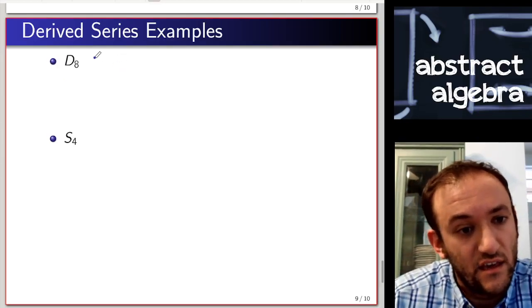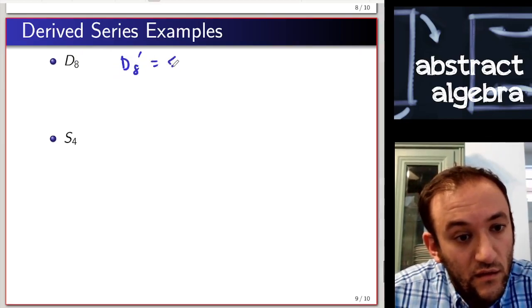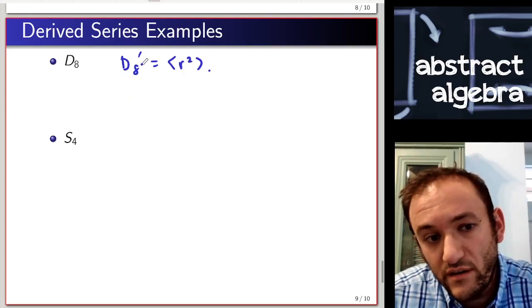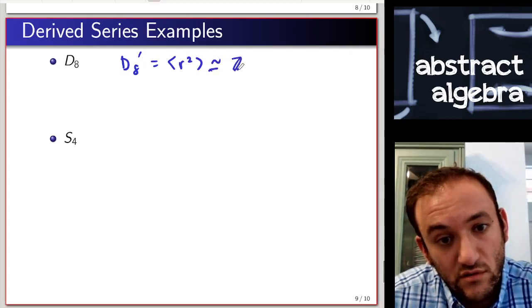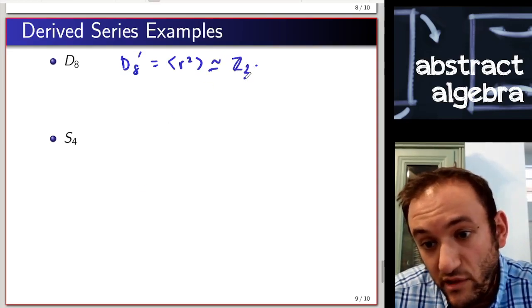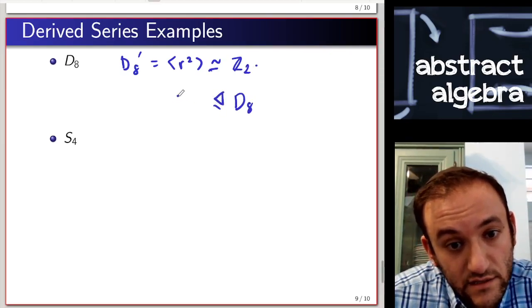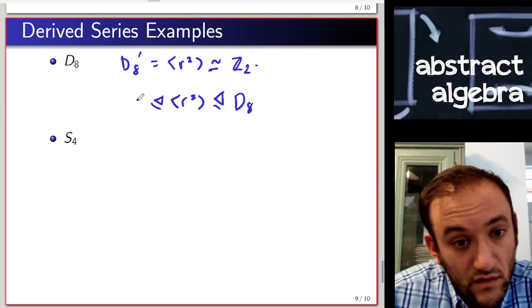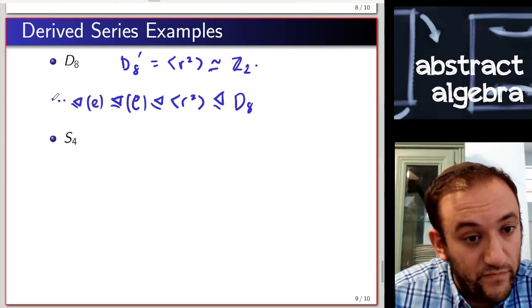Let's do a few examples. We already saw the commutator subgroup of D8 was {1, r squared}. As a subgroup, that's isomorphic to Z2, which is abelian, so its commutator subgroup is just {e}. The derived series for D8 is D8 contains {1, r squared} contains {e}, and you can keep this going since the identity is its own commutator.